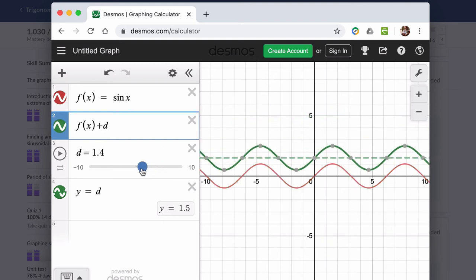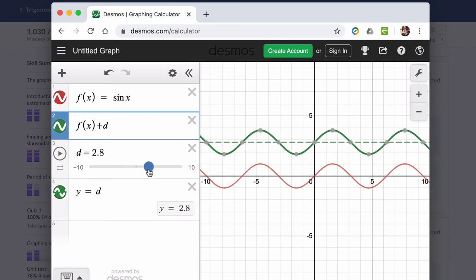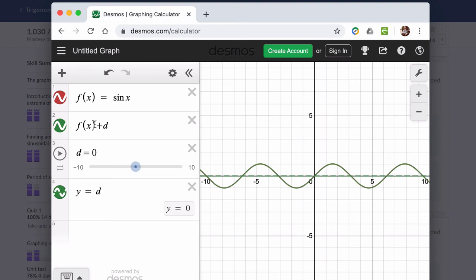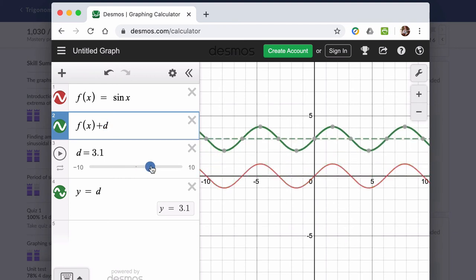And the same thing happens. You might show it this way because all functions do this. And by do this, I mean if you take the output of a function, in this case f of x, and you add to it, if the amount you're adding is positive, you translate it up vertically by that amount.